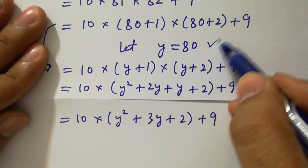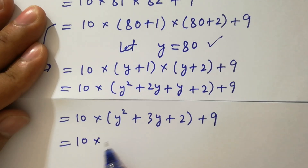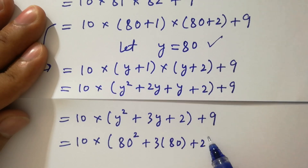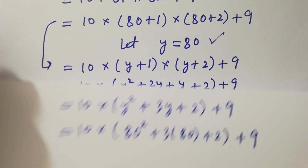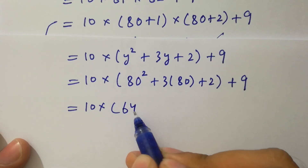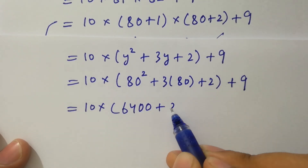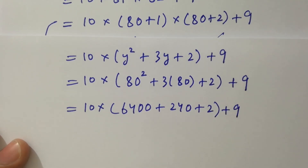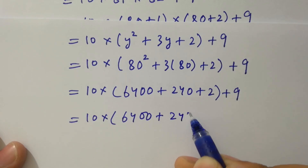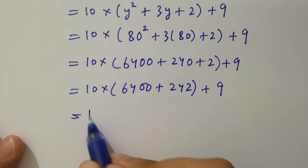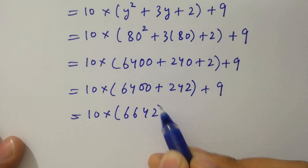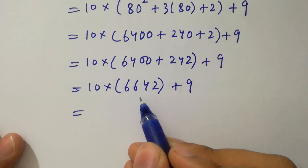Recall y equals 80, so it will be 10 times 80 squared plus 3 times 80 plus 2 plus 9 as it is. In the next step: 10 times 6400, plus 3 times 8 is 24 giving 240, plus 2 plus 9. Next step: 6400 plus 242, plus 9 as it is, which gives 10 times 6642 plus 9 as it is, and 10 times 6642 will be 66420.